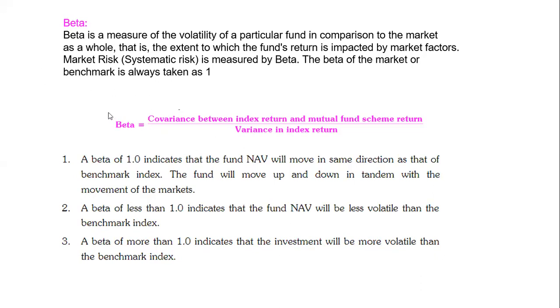The formula used is: covariance between the index return and mutual fund scheme return, divided by variance in index return.